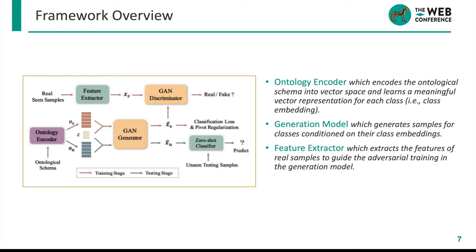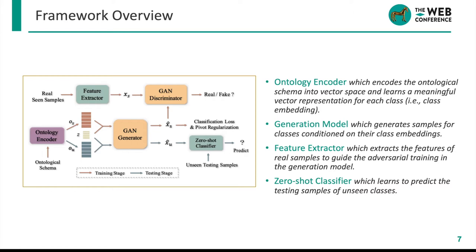There is also a feature extractor that is learned to extract the features of real samples, which will be used to guide the adversarial training in the GAN. After being trained with samples of seen classes, the generation model can be used to generate samples for unseen classes conditioned on the unseen class embeddings. Correspondingly, a zero-shot classifier is designed to predict the testing samples of unseen classes. The ontology encoder and generation model are general to different ZSL tasks, while the feature extractor and zero-shot classifier are task-specific.